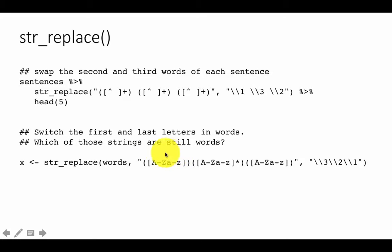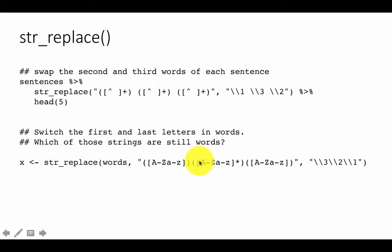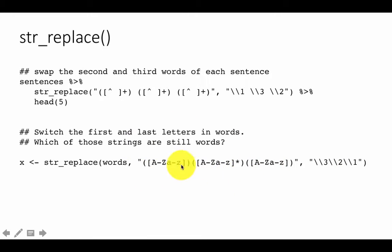So you have got the first character as group one, then zero or more characters in between as group two, and the last character as group three. If you want to swap the first and last letters, you write the replacement so the first letter is backslash-3 — which was earlier the third group — then backslash-2 for the middle characters, then backslash-1 for what was originally the first letter. So x will now be a collection of all the words in which the first and last letters have been exchanged.